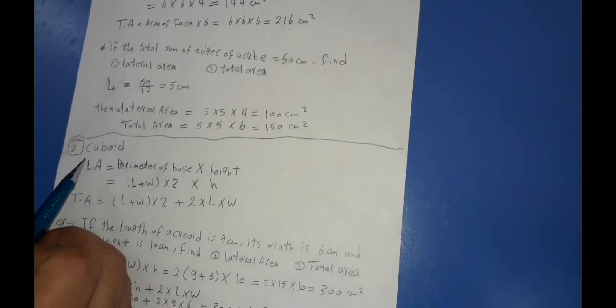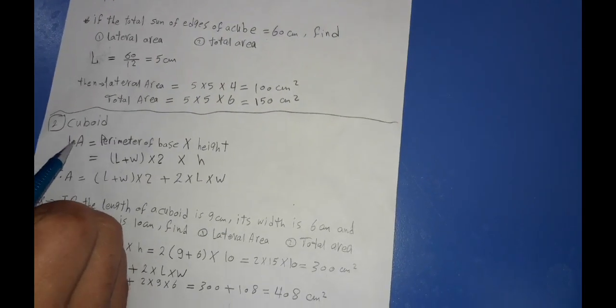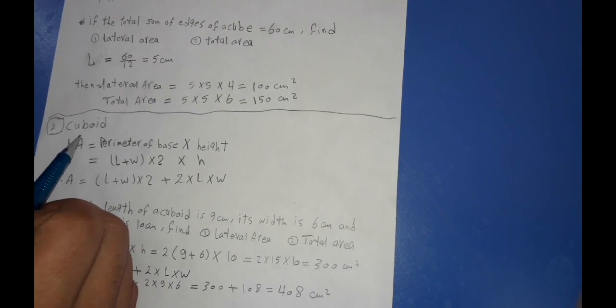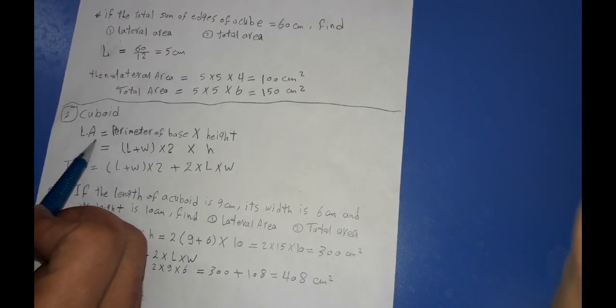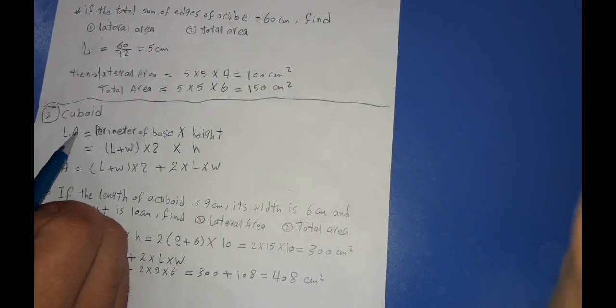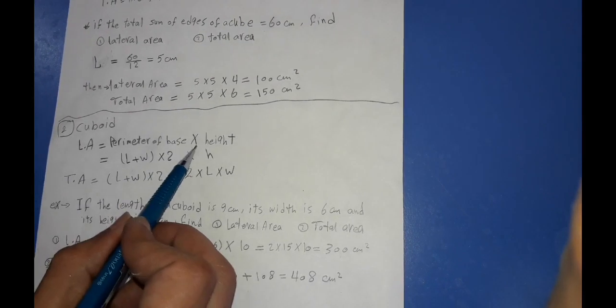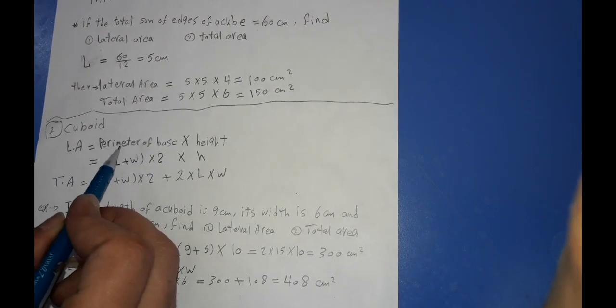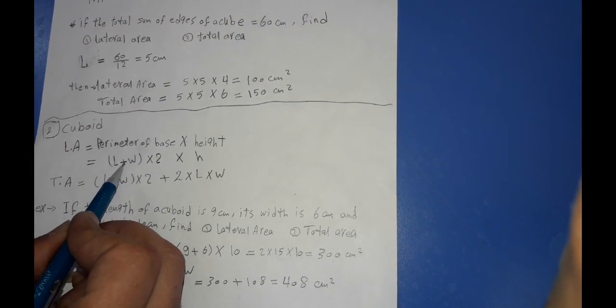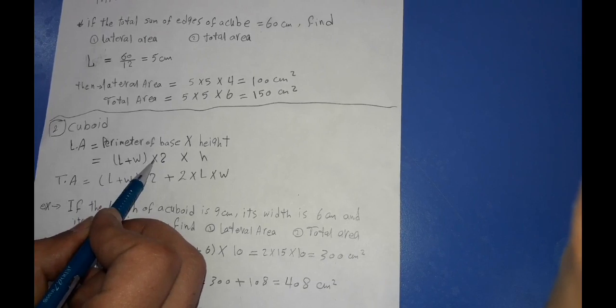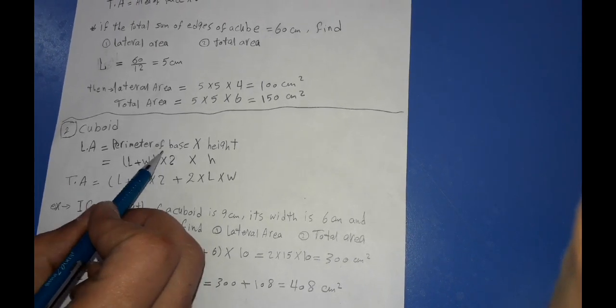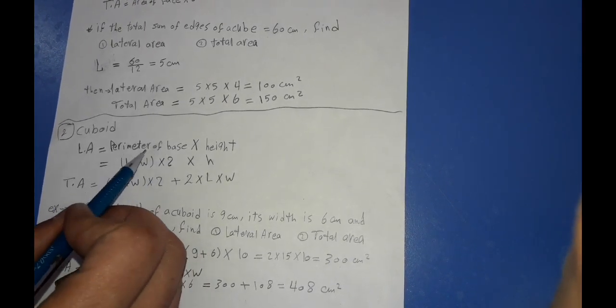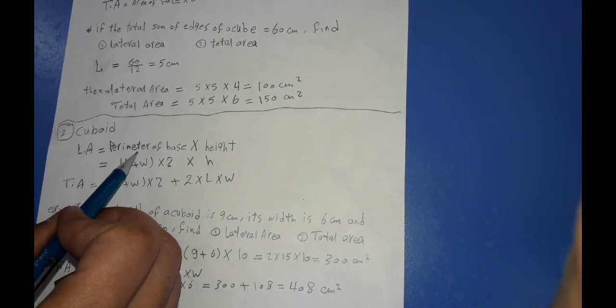And now we will take the total and the lateral area of cuboid. The lateral area of cuboid equals the perimeter of the base multiplied by the height. The perimeter of the base equals (length plus width) multiplied by 2, because the shape of the base is a rectangle.